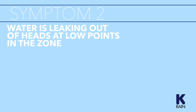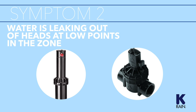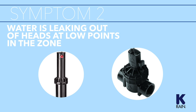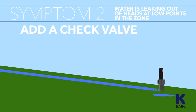Symptom 2: Water is leaking out of heads at low points in the zone. There are two common causes: a problem with the sprinkler, and a problem with the valve. If the leaking is intermittent and generally happens only after the zone has been run, the problem is usually the sprinkler head. When the zone shuts down, all of the water in the line flows downhill to the lowest sprinkler, where it can leak out. To address this, add a check valve in the sprinkler.